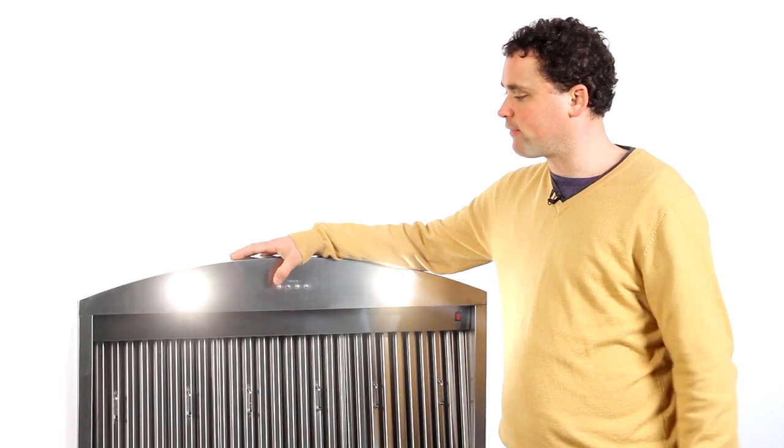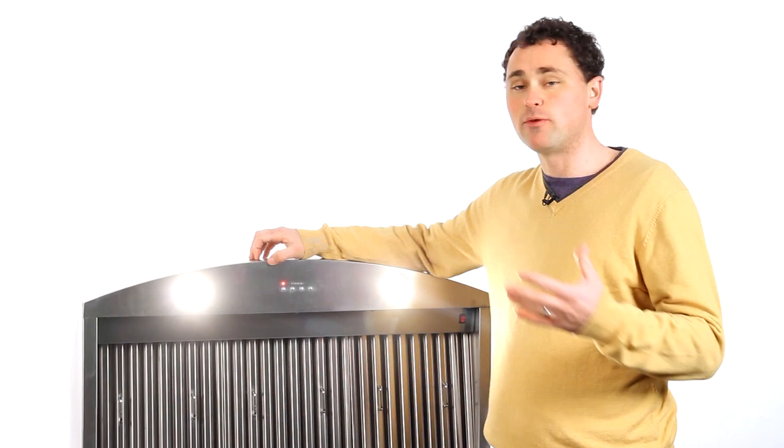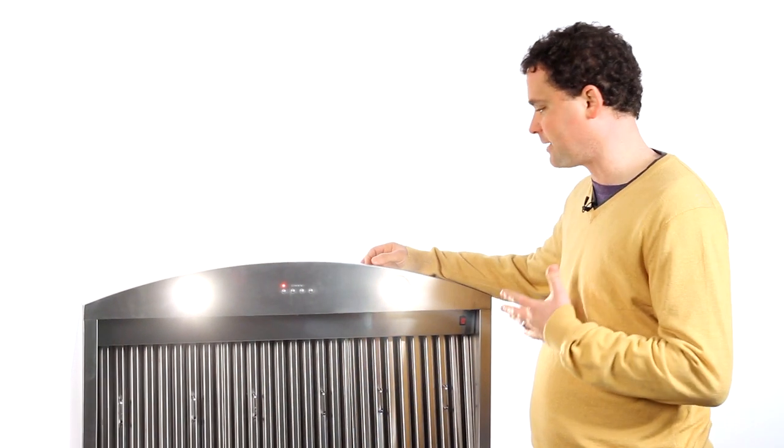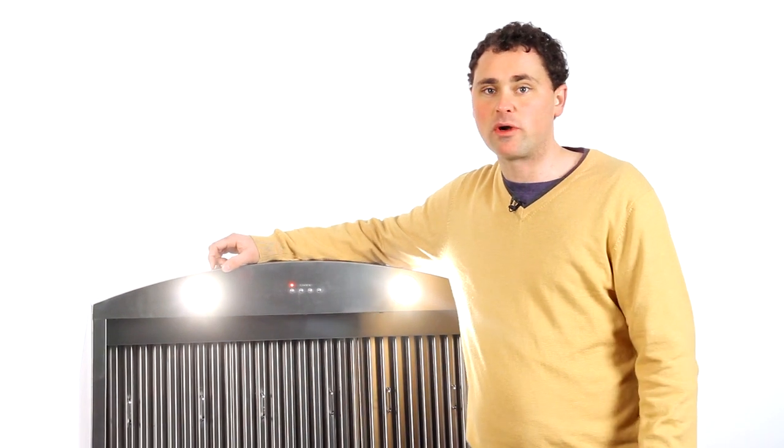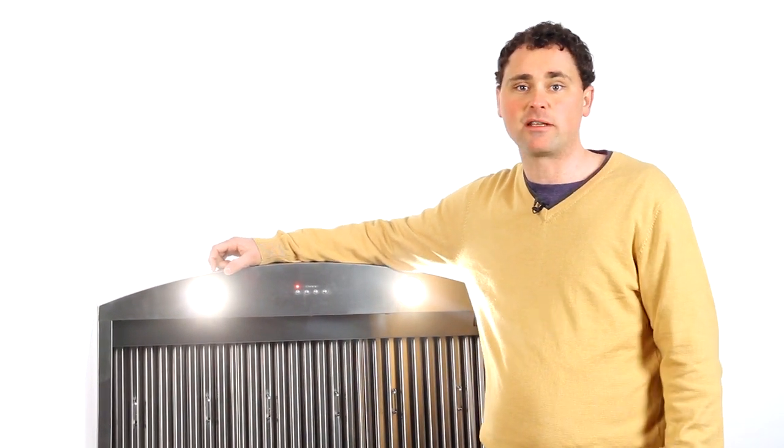This range hood comes with 35 watt halogen bulbs that are GU10 bulbs and they're going to keep everything nice and bright. But since they're GU10 you can go to any hardware store and switch them out for LED lights if you'd like to.